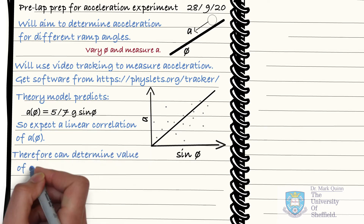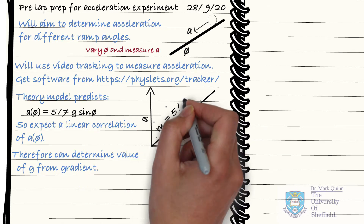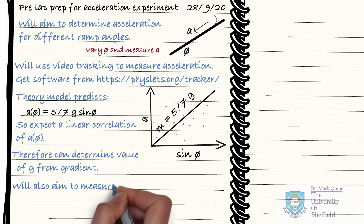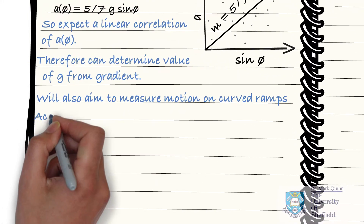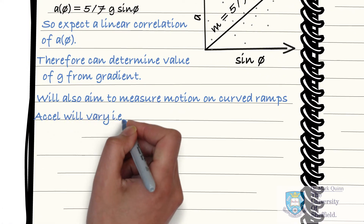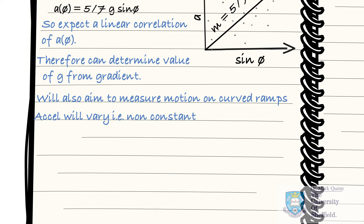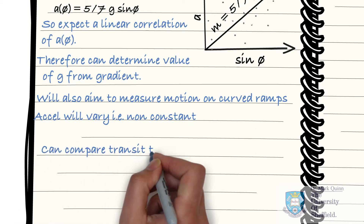Perhaps we could use our experiment to measure the value of the constant g. Or perhaps we might think it more interesting to measure the rolling friction of the ball on the surface. Some experiments may contain more than one part. For example, rather than constant acceleration, we may also want to measure non-constant acceleration. So here we would start to think about how we would change the curvature of the ramp, and what measurements we could extract from this experiment.